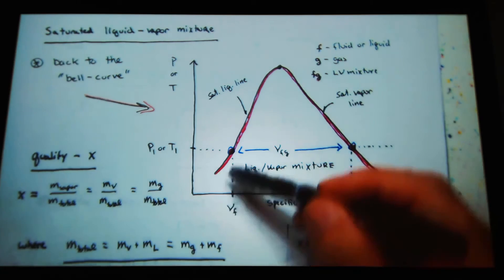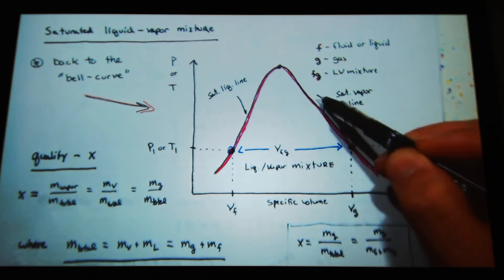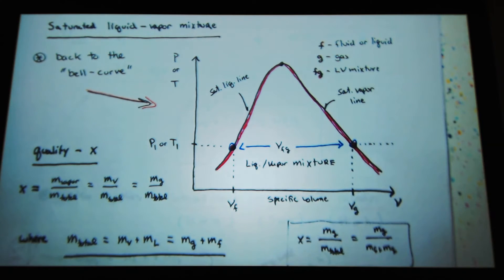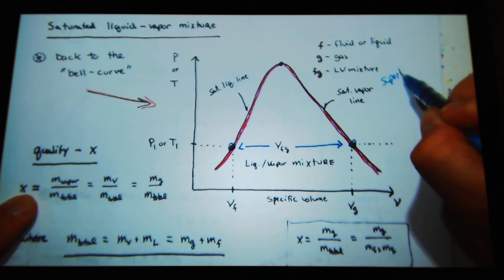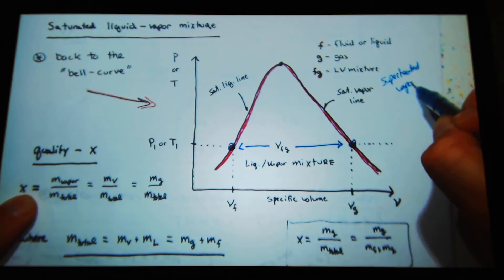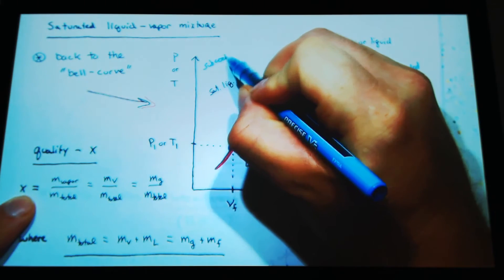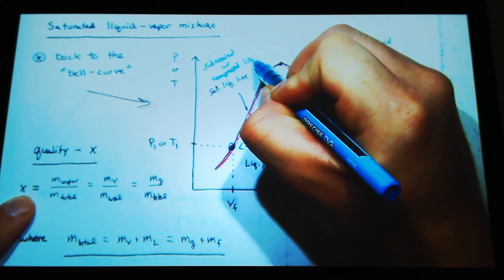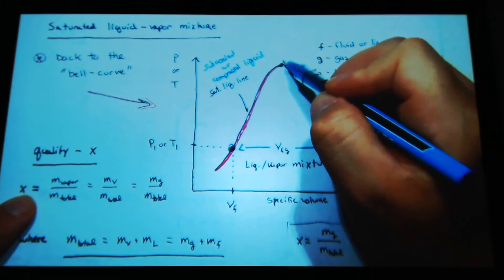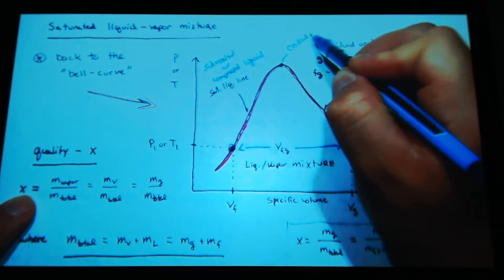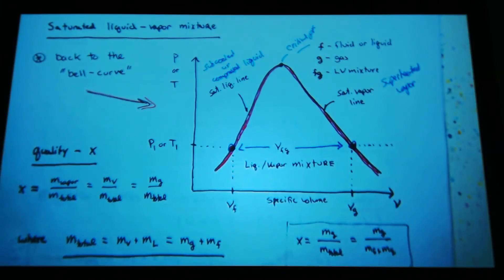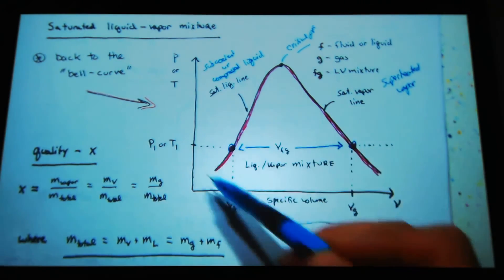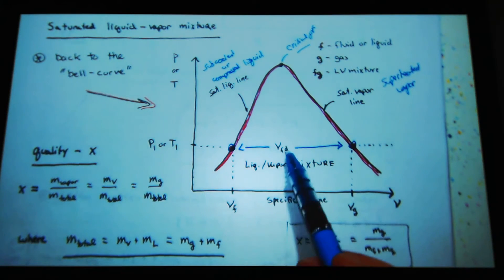I have a saturated liquid vapor mixture. I have this bell curve and then saturated liquid line, saturated vapor line. Here I have a liquid vapor mixture. Out here I have superheated vapor. Over here I have subcooled or compressed liquid. This is my critical point. If I want to talk about liquid, solid phase transformations, I can draw the other lines and I can put sublimation where I go from vapor to solid.